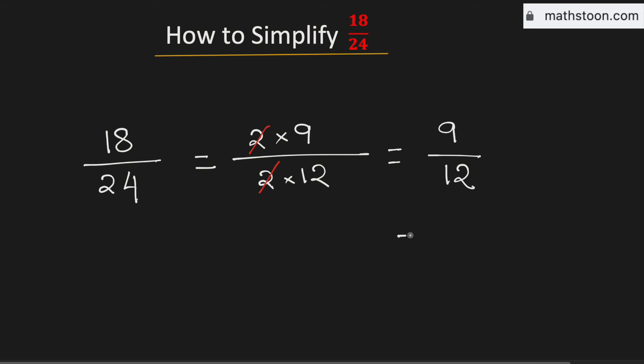Now we can write 9 as 3 times 3 and 12 as 3 times 4. Now again see that 3 is present in both the numerator and the denominator, so it gets cancelled. Therefore, this is now equal to 3 divided by 4.